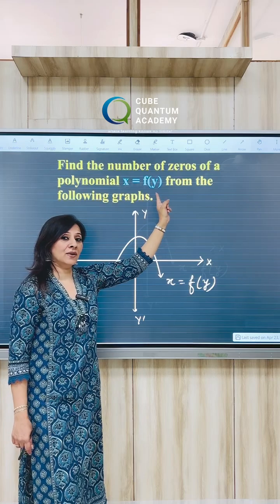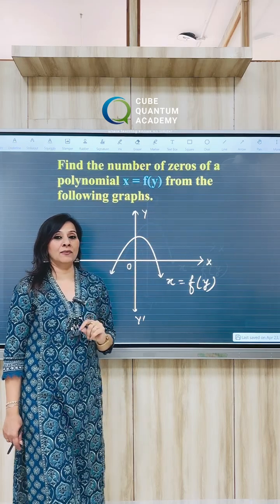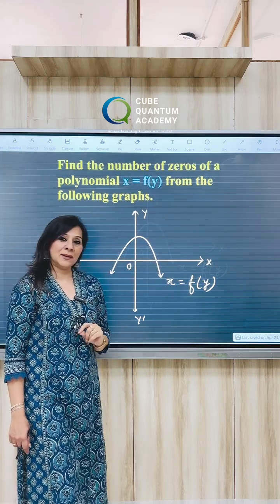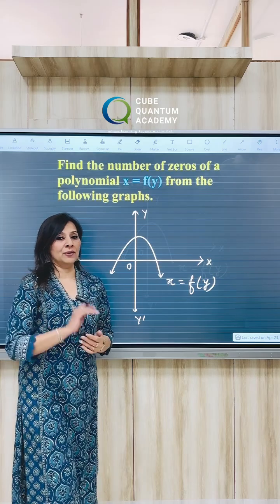This polynomial is x equals f of y. It means this polynomial is in terms of y. So please observe carefully before you count the number of zeros.